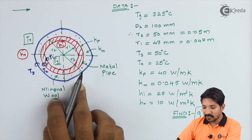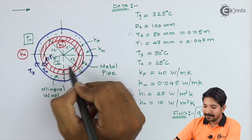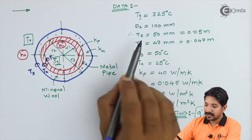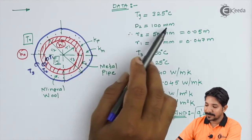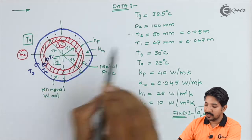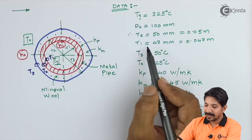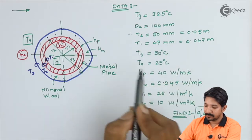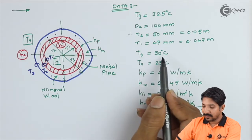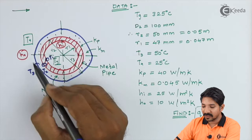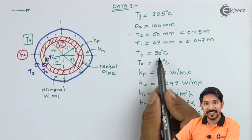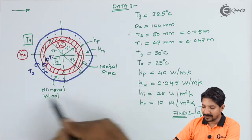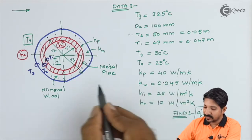Let us write down the given data. The pipe contains hot gas at temperature Tg = 325°C. The outer diameter is 100 mm, so the outer radius r2 = 50 mm. The thickness is 3 mm, so r1 = 47 mm. The temperature at the outer surface of the insulation, T3, is given as 50°C.